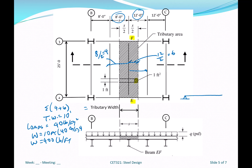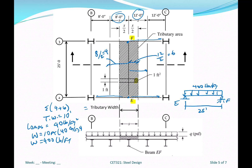In my analysis, if this beam EF has 400 pounds per foot spanning over 25 feet, the reactions of this beam become the loads on the girder at each end. Then part of that load goes to the column. This happens for every beam on the framing plan. Tributary width is the summation of half the spacings on either side of the beam.